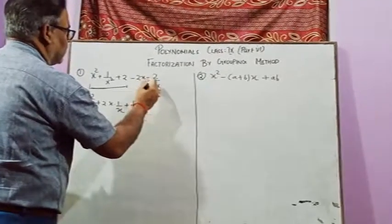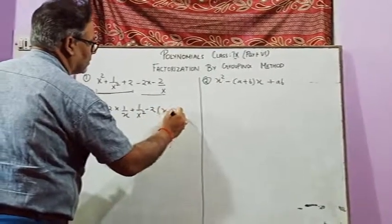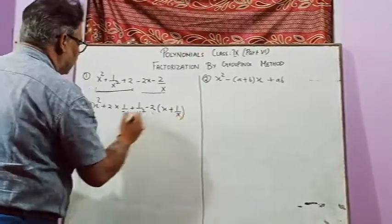And from this part, you may take out this minus two. So it becomes x plus one upon x.